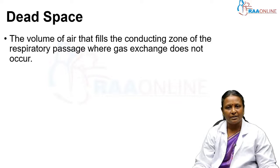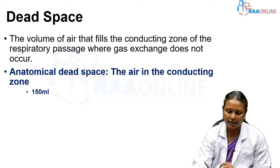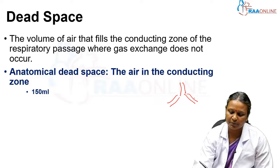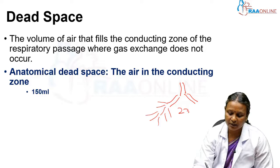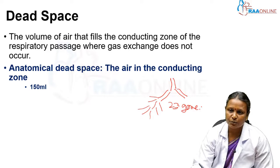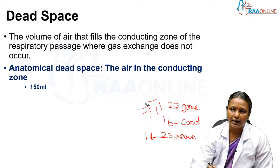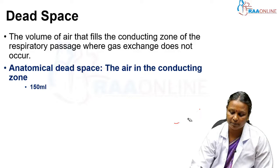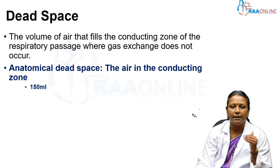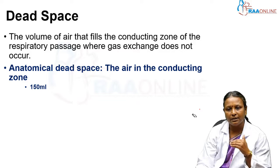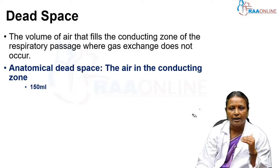Which area of the respiratory passage does gas exchange not occur? The trachea branches into right and left main bronchus, which divides into progressive branches — 23 generations of branching in total. Up to generation 16 is called the conducting zone, and from 16 to 23 is the respiratory zone. The anatomical dead space is the air occupied in the respiratory passage from the nose up to the 16th generation of branching, with a volume of around 150 ml.